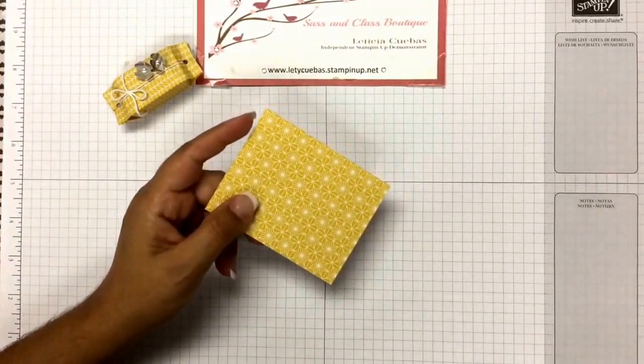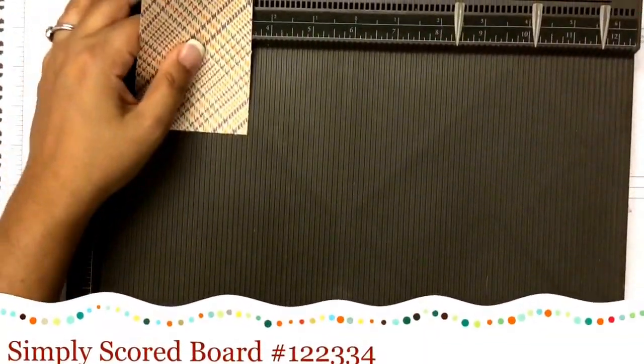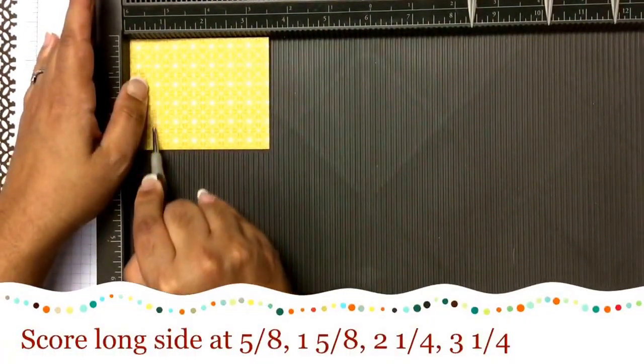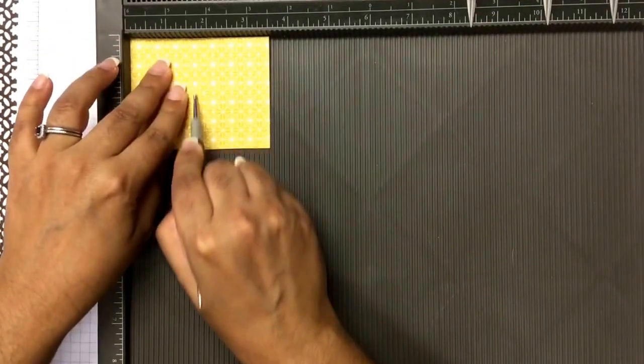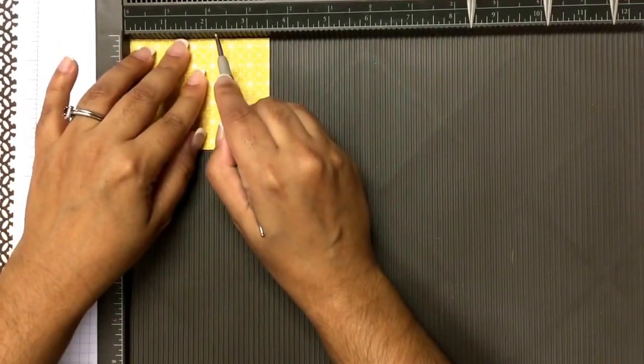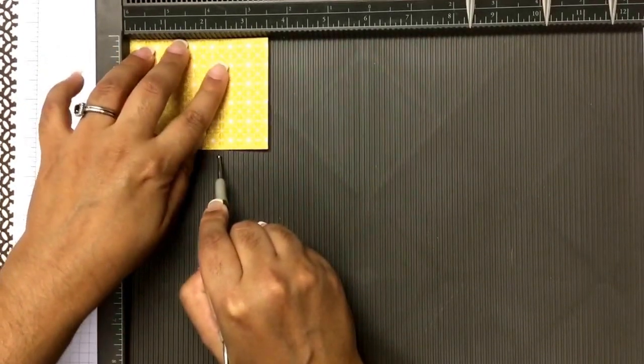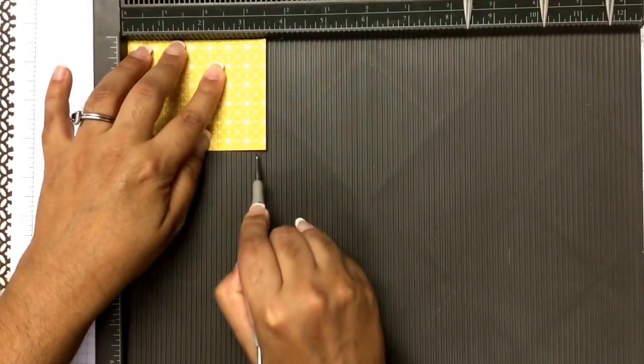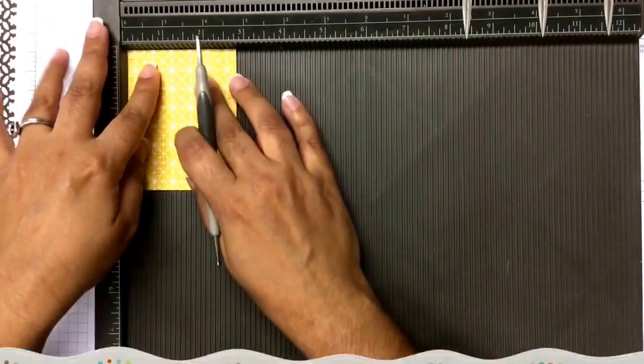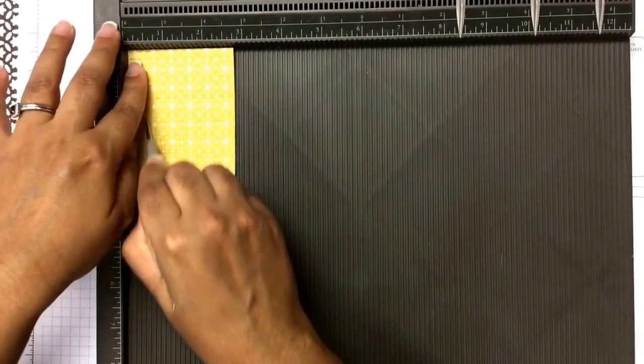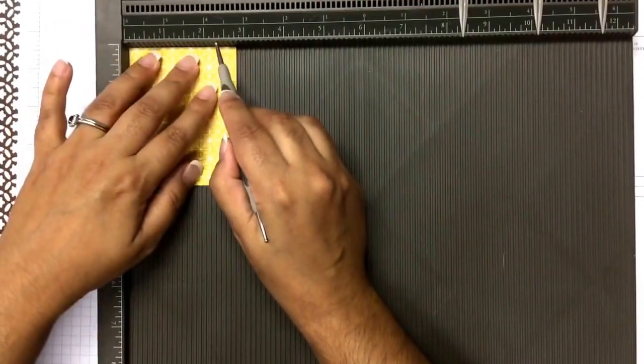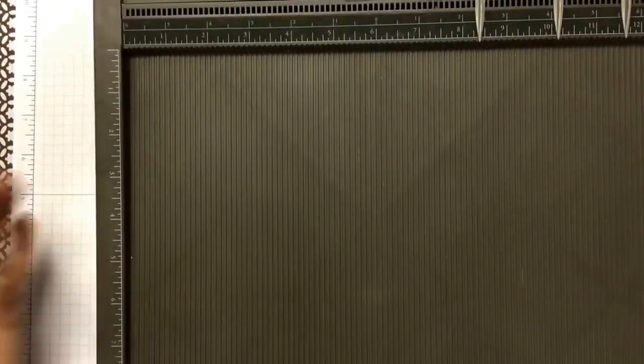I'm going to bring in my scoreboard, and we are going to score this at five-eighths of an inch, and at one and five-eighths, and then two and a quarter, and then three and a quarter. Then we're going to turn it on the short side, and we are going to score at half an inch and then at two and a quarter.